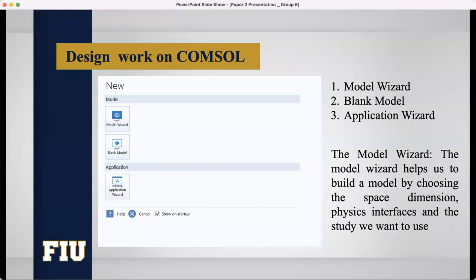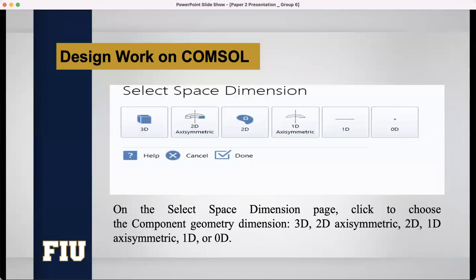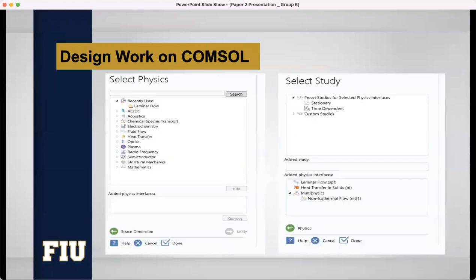After selecting the model wizard, there will be three steps to start to design our model. First one will be select space dimension, then select physics, and then select study. Here is the select space dimension phase. We can see there are different dimensions: three dimension, two dimension, one dimension, and zero dimension. After selecting any dimension, specifically in our design, we have used three-dimensional model. That's why we will select 3D, and then we will select done. After selecting done, we will go to the next phase, which is select physics.